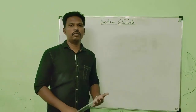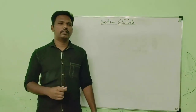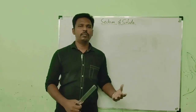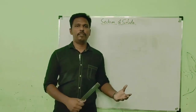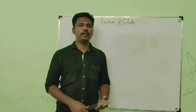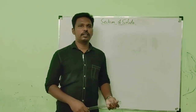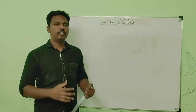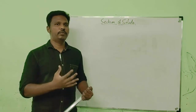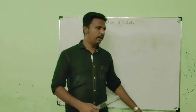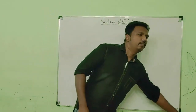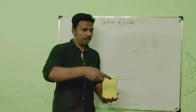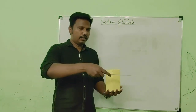Here we will section simple solids like pentagonal prism, hexagonal prism, and similar shapes, and we will see how they appear in their sectional views. The sectional plane may be parallel to VP and perpendicular to HP — this is one orientation.